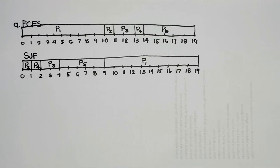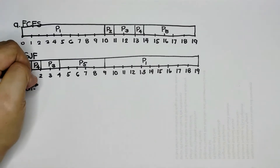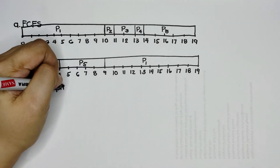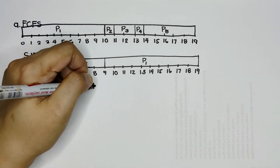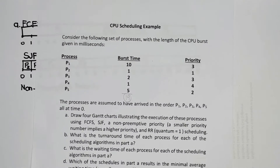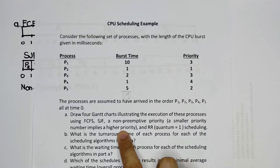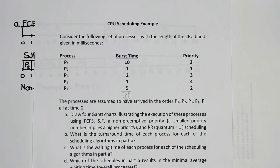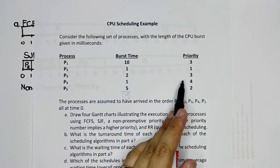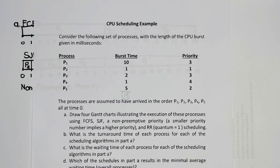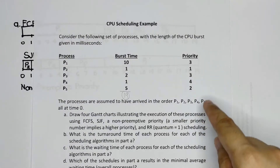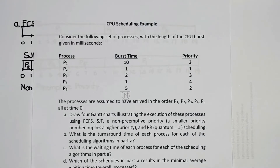Next is non-preemptive priority scheduling. The condition here is that a smaller number implies higher priority. So priority 1 goes first. We have two processes with the same priority number — P1 and P3 both have priority 3. We'll decide how to handle them after we finish with priority 1 and priority 2.